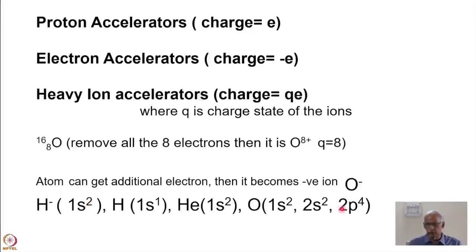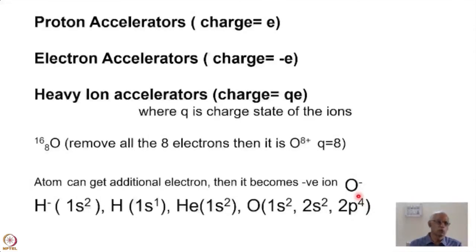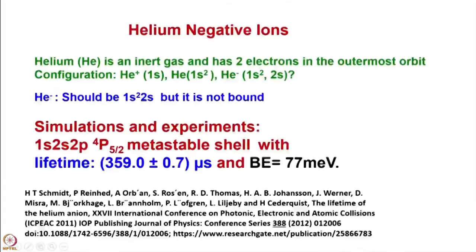However, there is a metastable state where the negative ion of helium is possible and it is bound for a short period, for about 360 microseconds. In the case of oxygen, if it is a neutral atom, then the configuration will be 1s2, 2s2 and 2p4. It has eight electrons. P can have still two more electrons. Therefore, O minus is possible without any problem. So if O minus you take, then it will have two plus five. Still one more electron, but unfortunately, binding energy does not allow this to happen.